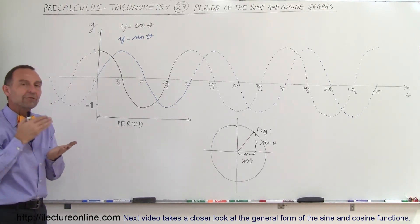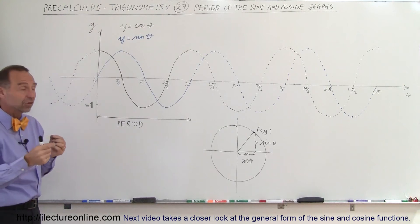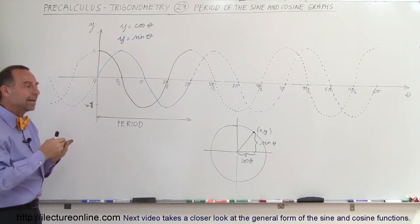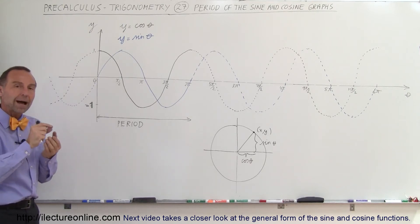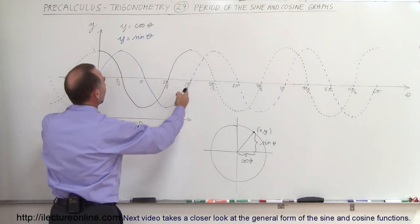When you try to calculate the value of the sine or the cosine and the angle is greater than 360 degrees or greater than 2 pi, you typically will subtract an integer multiple of 2 pi or an integer multiple of 360 degrees from the angle so that the angle then falls between 0 and 2 pi, and then you evaluate the function.